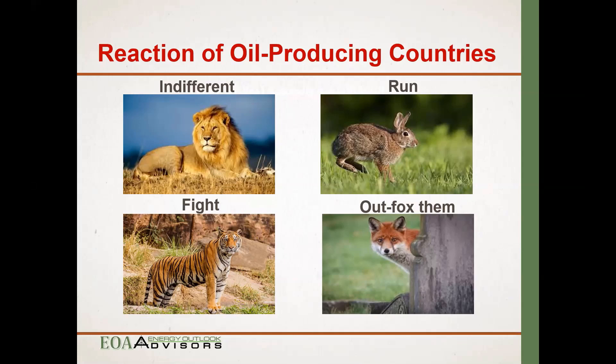So they resort to the fox behavior — out-fox them all. How? They say: you're going to use electric vehicles, you're going to use renewable energy instead of gasoline and diesel? Go for it. I'm going to make sure the body of the car is made from oil. Every part of that car is made from oil. You want wind turbines? I'll make sure most of the parts in that wind turbine are made from oil. You want solar? Everything you need to build that solar will be made from oil. Oil to materials is the new approach — that's what's coming up right now.